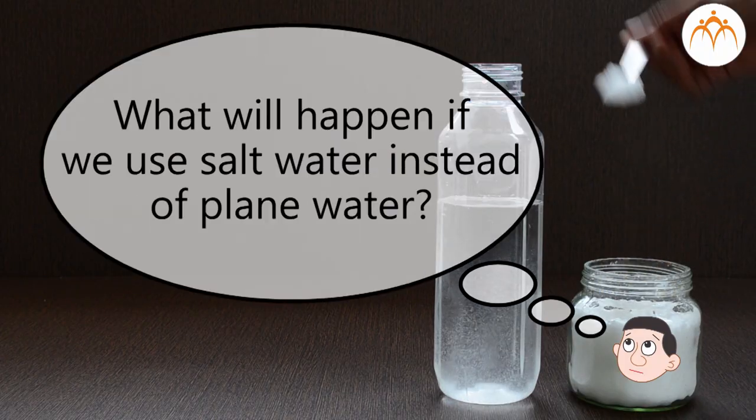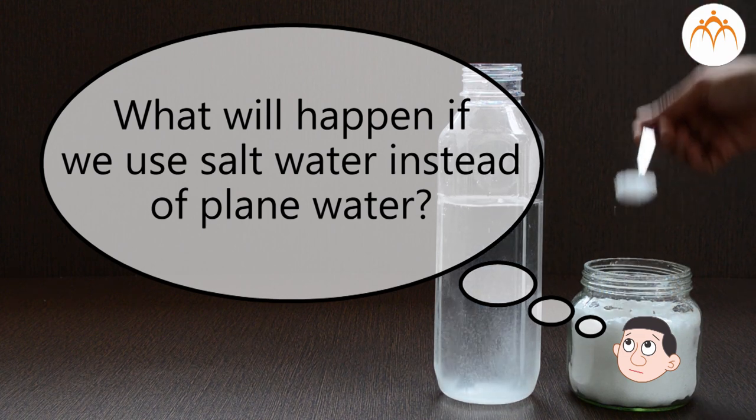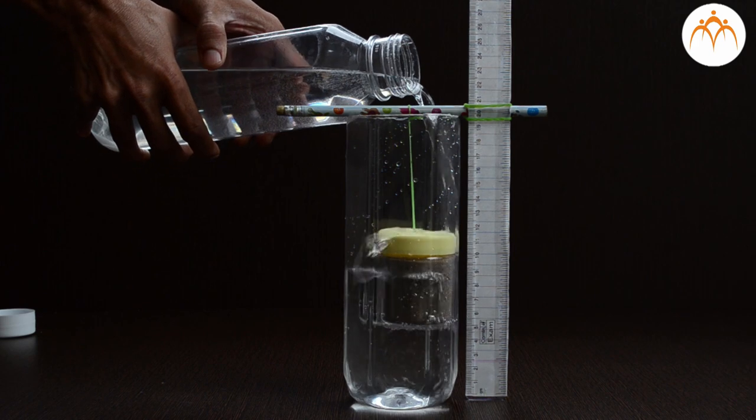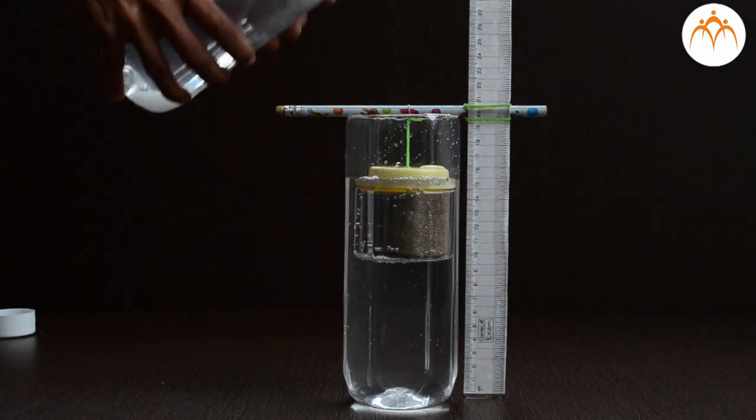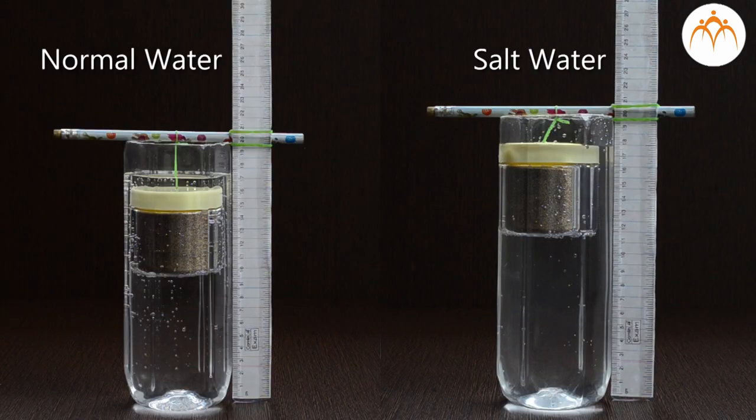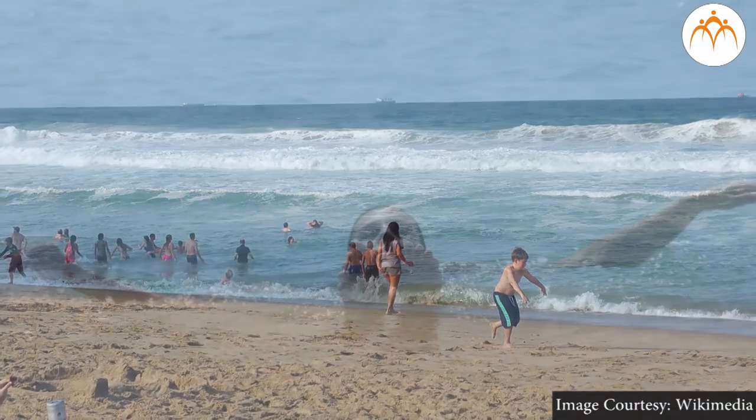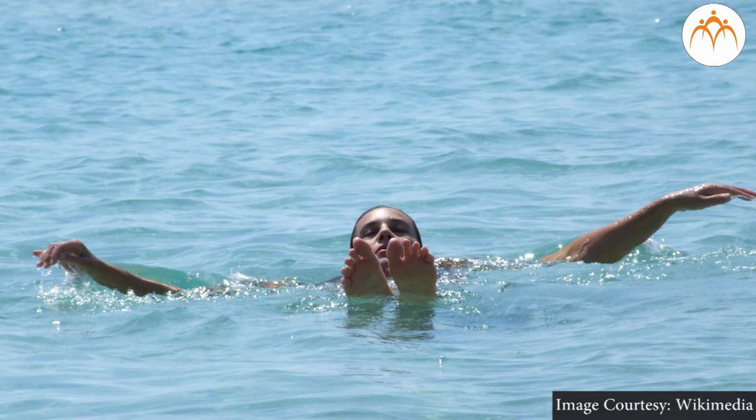What will happen if we use salt water instead of plain water? Rubber band is now less stretched. As density of salt water is more than that of normal water, buoyant force exerted on the block is more. This is the reason why it is easier to swim in sea water than fresh water.